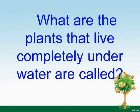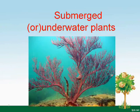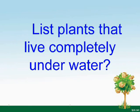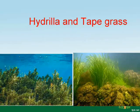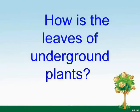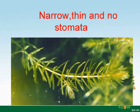Plants that live completely underwater are called submerged or underwater plants. Examples include hydrilla and tape grass. The leaves of underwater plants are narrow, thin, and have no stomata.